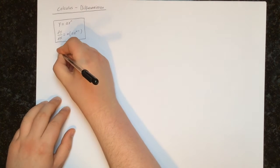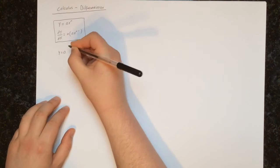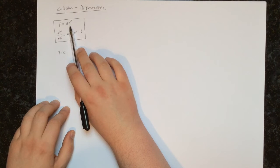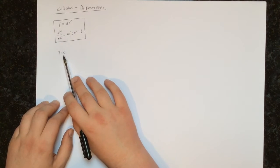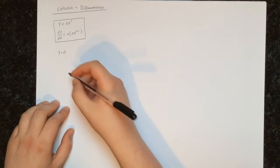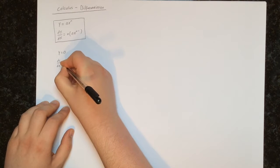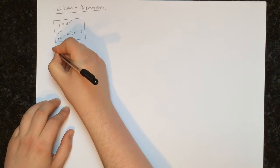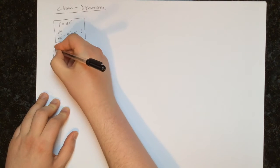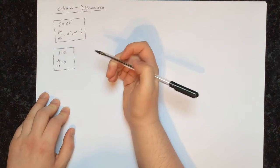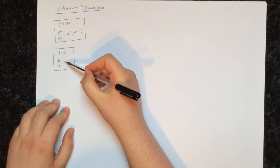So in this video, what I want to talk about is what happens if y equals some constant a. We know how to deal with a multiplied by x to some power, but what if there is no x — what if it's just a? Well, the answer is that dy/dx will be equal to 0 in all cases, regardless of the value of a. So if y is some constant, then dy/dx will be 0.